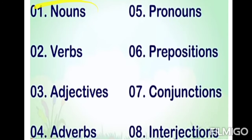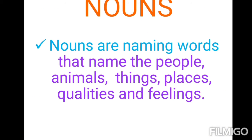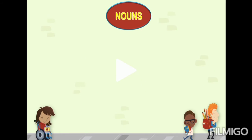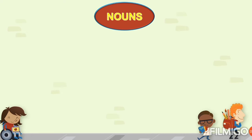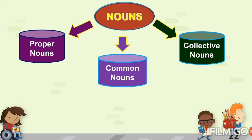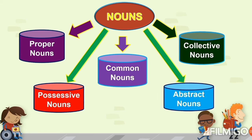Today we are going to talk about only noun. Do you know what is meant by noun? Nouns are naming words that name people, animals, things, places, qualities, and feelings. There are many types of nouns, but today we are going to cover only particular nouns: proper nouns, collective nouns, common nouns, possessive nouns, and abstract nouns.